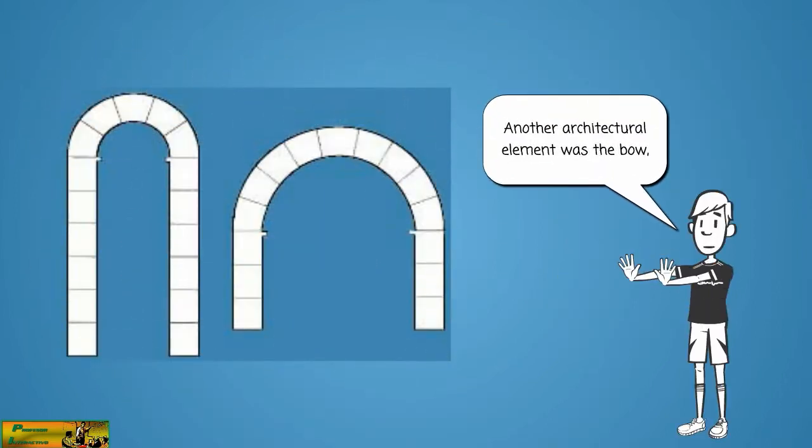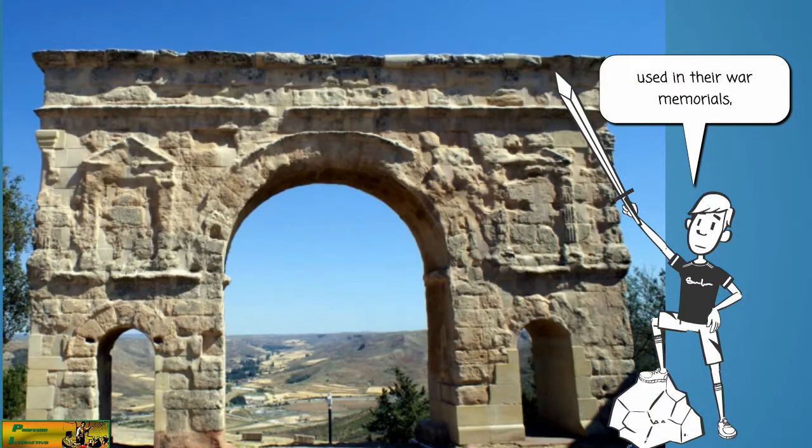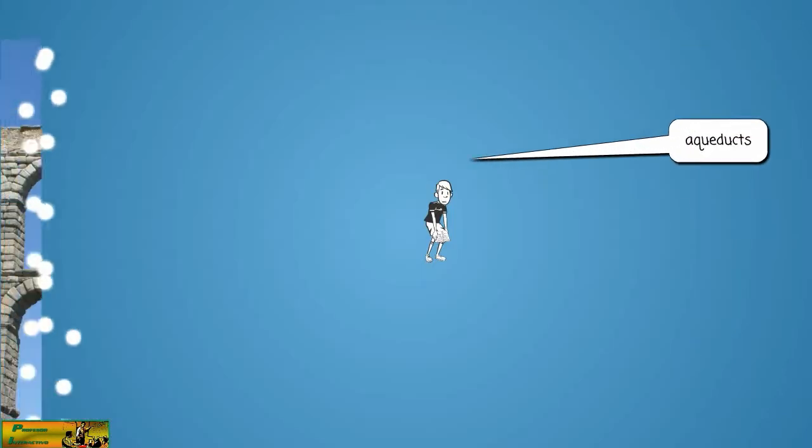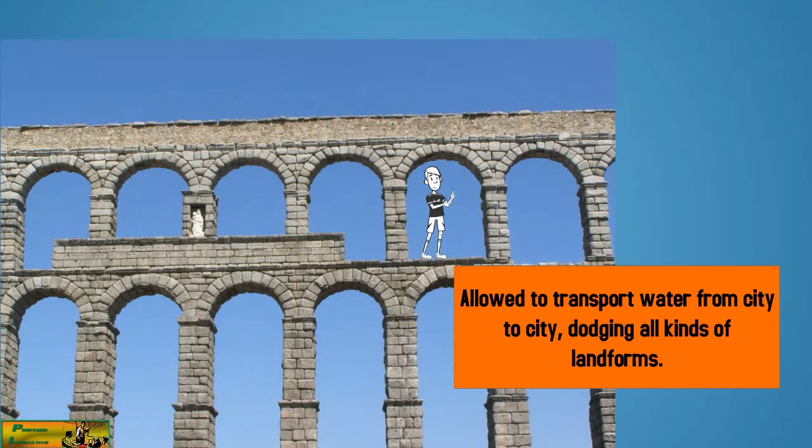Another architectural element was the bow, used in their war memorials. Aqueducts allowed to transport water from city to city, dodging all kinds of land forms, and bridges.